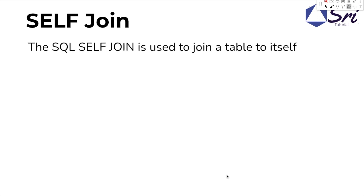I will tell you how to find self-join. Self-join is the definition of each other, but self-join is the struggle to choose the same way. So, the SQL self-join definition: it is used to join a table to itself. That means, if you want to join a table with itself, we call that a self-join.